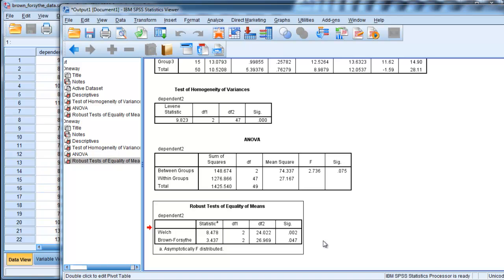In this case here, Brown-Forsythe is actually saying P less than 0.05, as is Welch. So in this case here, Welch is even more powerful than Brown-Forsythe. As I mentioned,